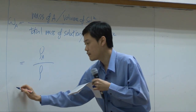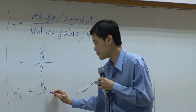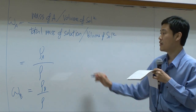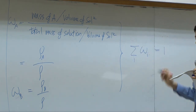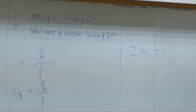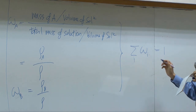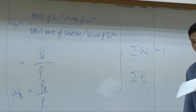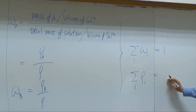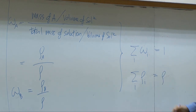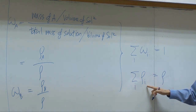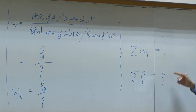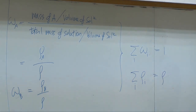Similarly, ω_B = ρ_B / ρ. Adding these together, we know that the summation of ω_i must equal one. Therefore, summation of ρ_i equals ρ. The physical meaning of this equation is that the summation of mass concentrations of all species in your system should equal the total concentration of your solution.